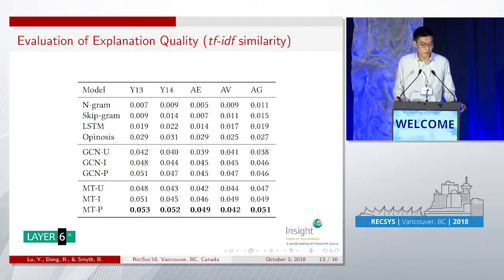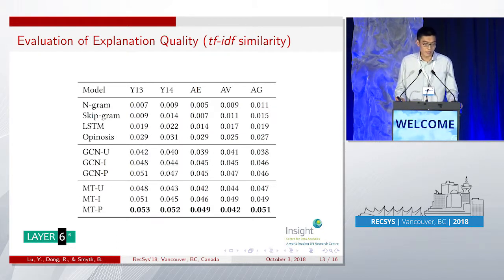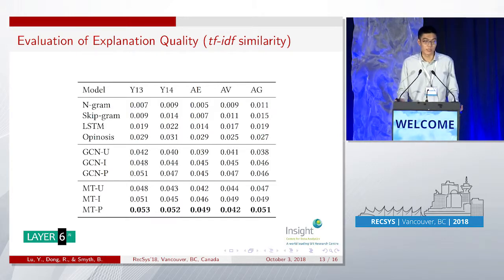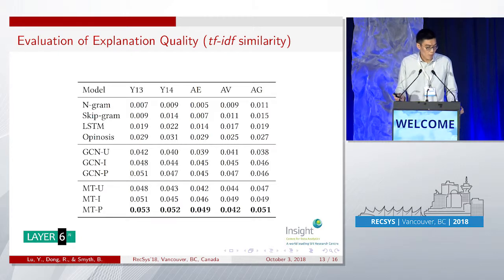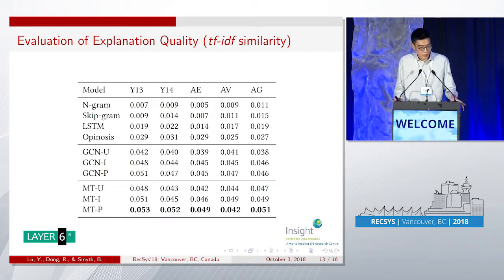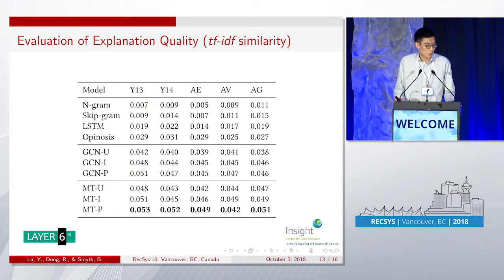For evaluating explanation quality, we first use perplexity, a commonly used metric in the NLP community for evaluating goodness of language models. Although it's not a perfect metric for evaluating explanation quality, it provides a useful starting point. MTU, MTI, and MTP refer to the multitask learning model for generating user-specific, item-specific, and personalized explanations. The multitask learning algorithm outperforms all the baseline models by a wide margin across all datasets.